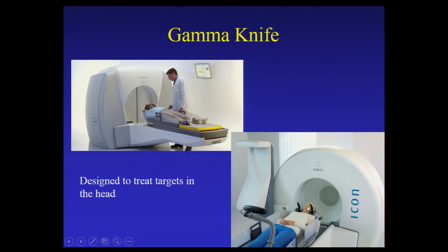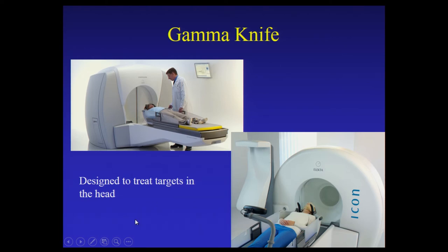Down here is the latest version of the gamma knife unit, which we will presumably receive early next year. It's slightly different — it does not involve a frame bolted to the head. It's a frameless system using a mask, and it has an onboard CT scanner that helps us localize the tumor in near real time.